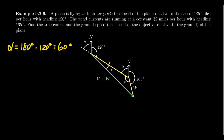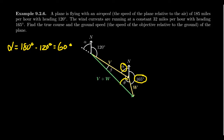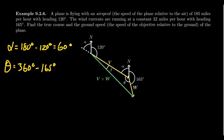Why is that relevant? North is always pointing upward, so vector V acts like a transversal to the vertical north lines. By the alternate angle theorem, the angle down at the tail of W is also alpha — corresponding angles. So alpha plus 165 degrees plus theta together form one complete rotation of 360 degrees. Therefore, theta equals 360 minus 165 minus 60, which gives us theta equals 135 degrees.